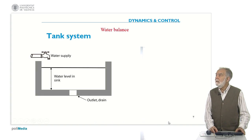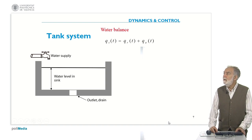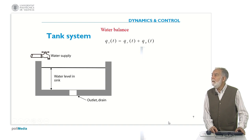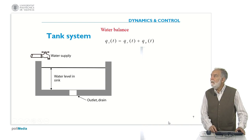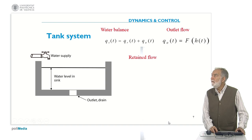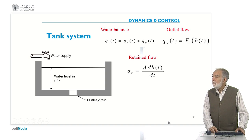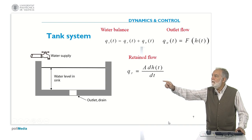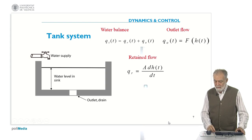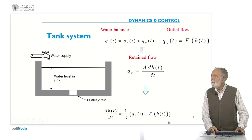We will see some examples to realize what that means. For instance, in the case of a tank system we have seen before, we made a water balance. That means that the flow input in the tank is equal to the outlet flow plus the flow retained. The outlet flow is a function of the height — the level of the water. And the retained flow depends on the amount of water kept inside the tank. You can see in this formula that the flow u times the time increment is equal to the area of the tank times the increment of the level. So this leads to a differential equation representing the tank system.